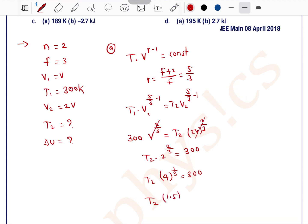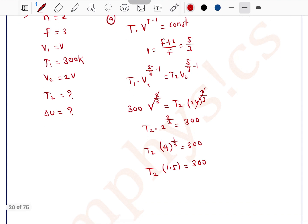This can be written as T2 is equal to 300 into 2 by 3, which is equal to T2 approximately 200 Kelvin.